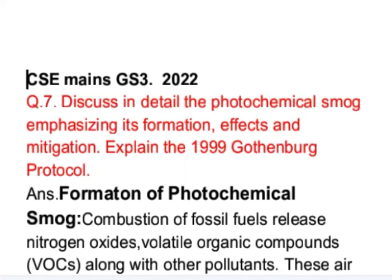This is question number 7 from GS paper 3 of Maine's 2022 examination. Discuss in detail the photochemical smoke, emphasizing its formation, effects, and mitigation. Explain the 1999 Gothenburg Protocol.